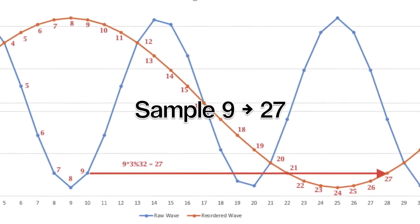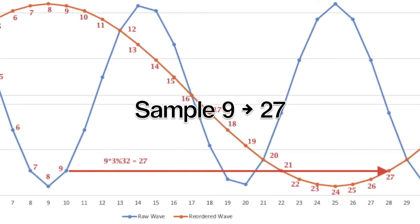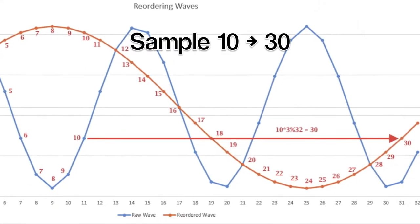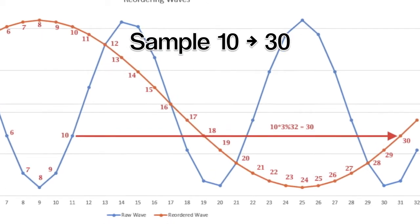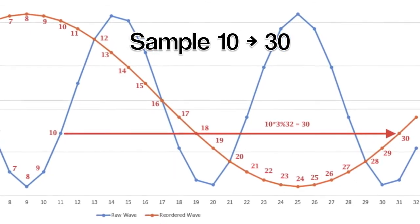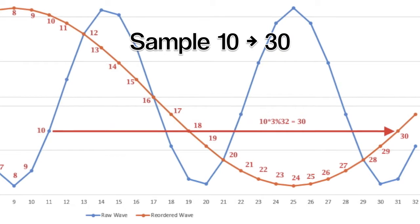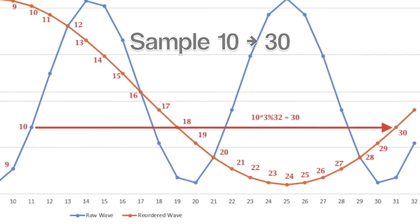Sample nine becomes sample twenty-seven, since nine times three is twenty-seven. Sample ten becomes sample thirty. We are nearly at the end of our output array for a single cycle wave. But don't forget about the modulo operator. That will save us in just a bit.